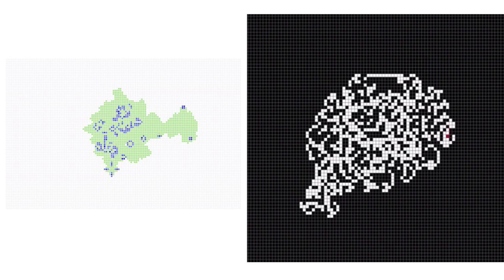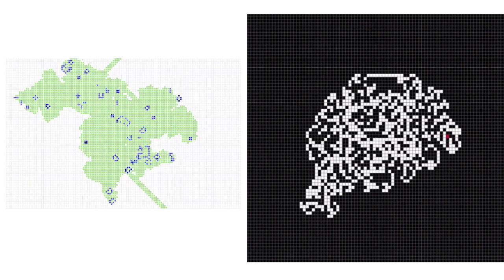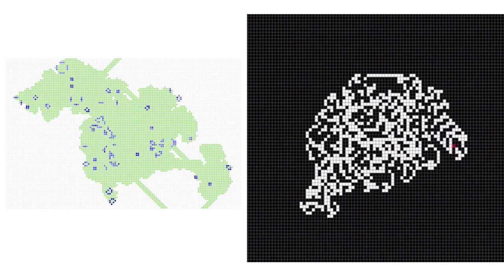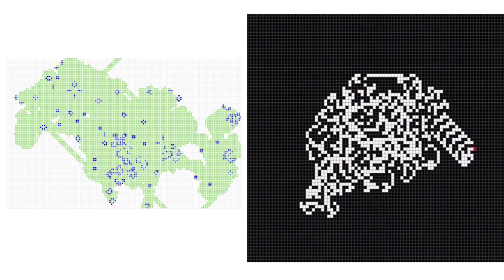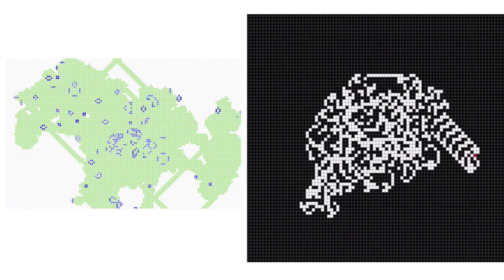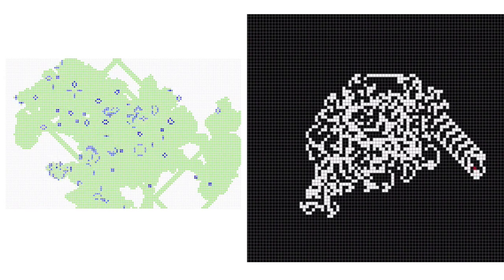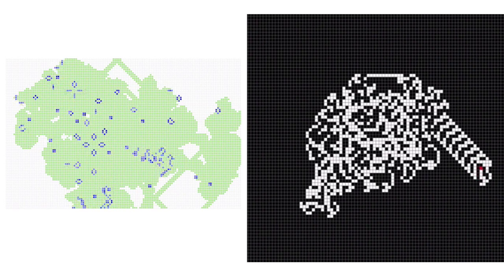The game of life and Langton's ant bring out a challenge to predicting the future. We can do a lot of calculations to see what happens after, say, one million steps, but usually there's no theorem that immediately tells you what that state will be.